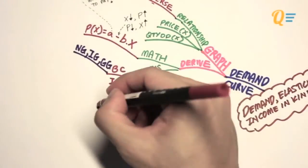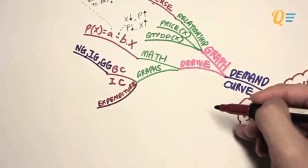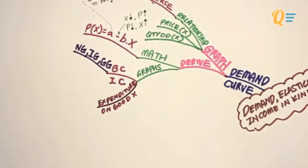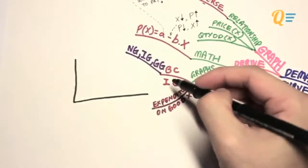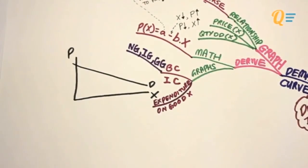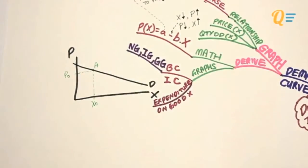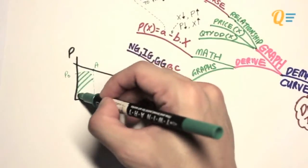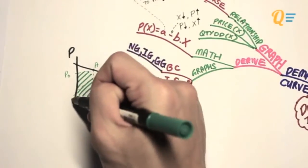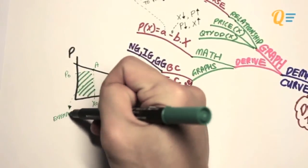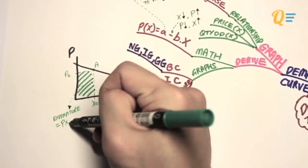Now that we've got the demand curve settled, what we need to learn next is how do we identify expenditure on good X on the demand curve? So let's say we have a demand curve and initially the price of X is P0, which gives us a quantity demanded of X0. How do we identify what is the total expenditure on good X? Well, it's very simple. Total expenditure is simply the price of X multiplied by the quantity of X. What that means is that if you were to calculate the area of this green triangle over here, you should get the total expenditure on good X.